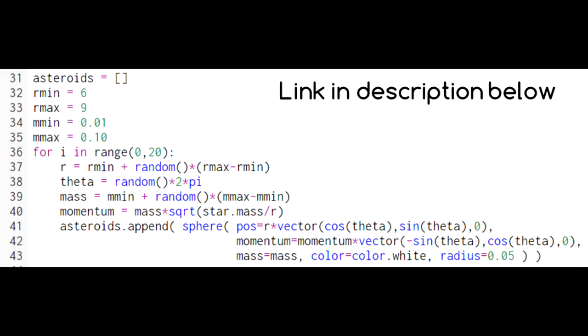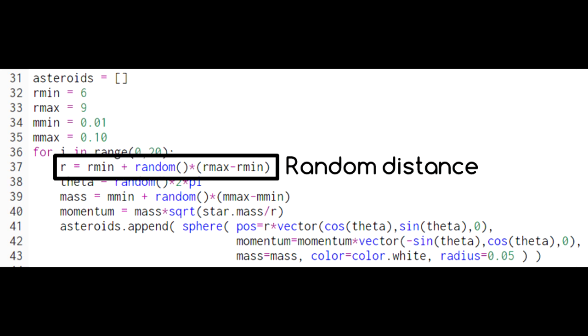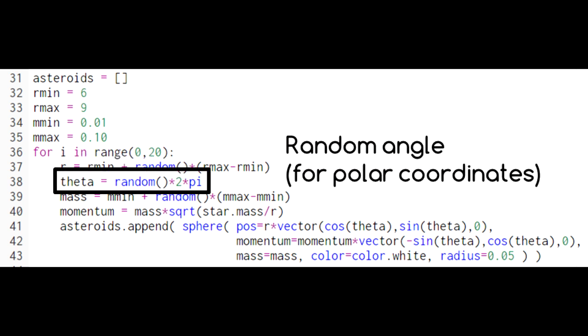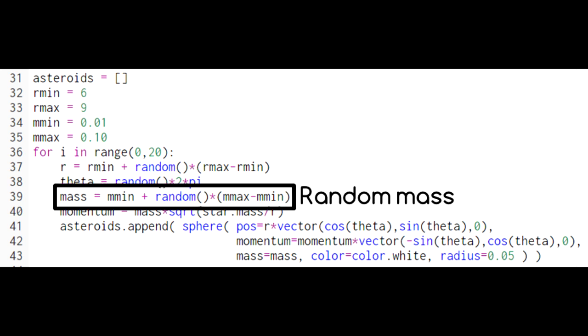In this code, which is available at a link in the description below, we're setting up a belt of randomly generated asteroids beyond our planet's orbits. Here, we select a random distance from the star where we'll place the asteroid. Then we select a random angle around the star where the asteroid will start. Finally, we select a random mass for the asteroid.